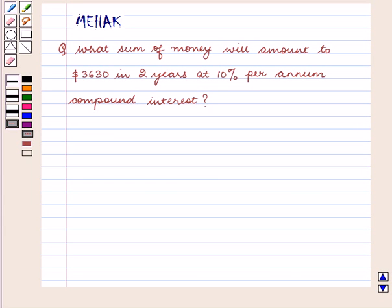Hello and welcome to the session. In this session we are going to discuss the following question. The question says, what sum of money will amount to $3,630 in 2 years at 10% per annum compound interest?